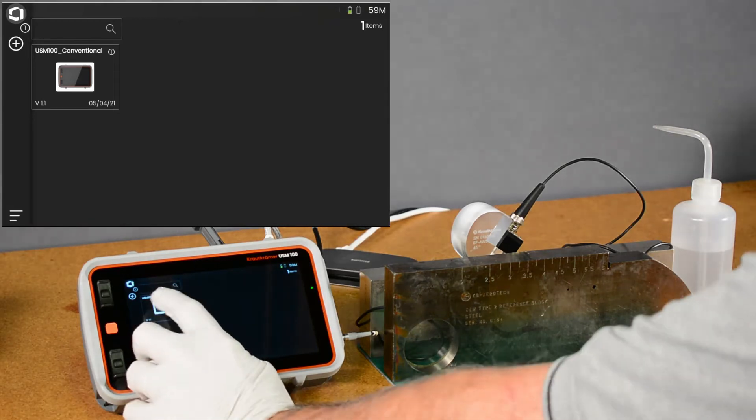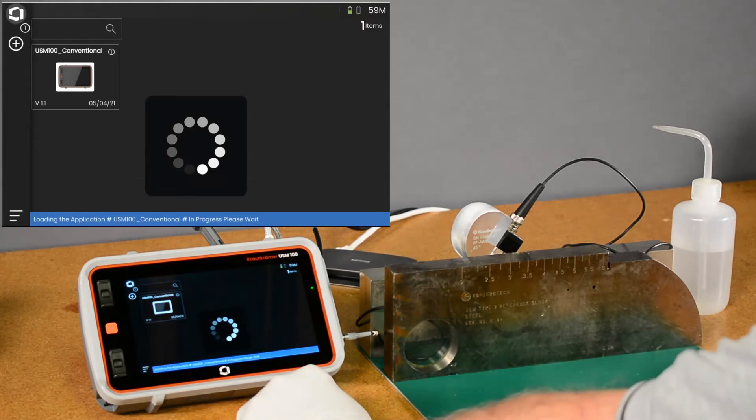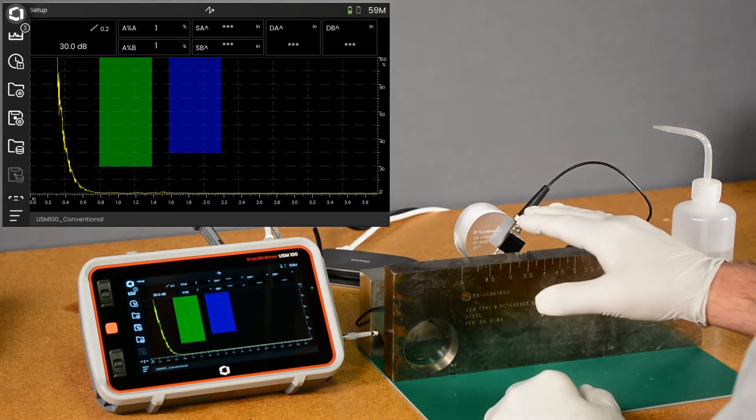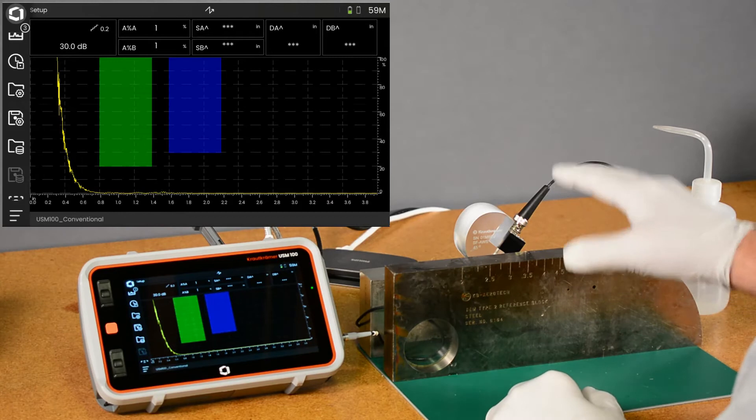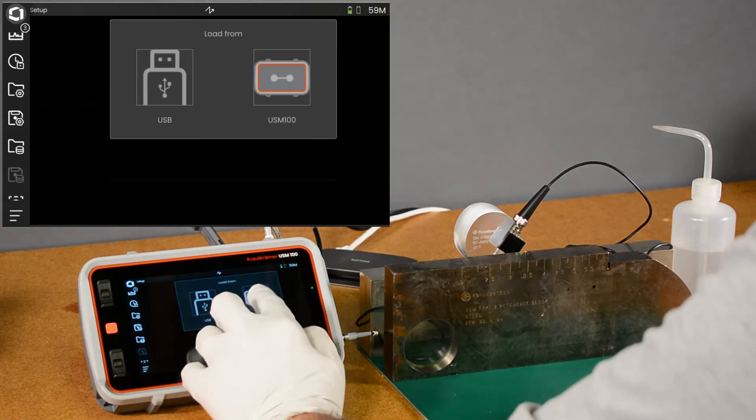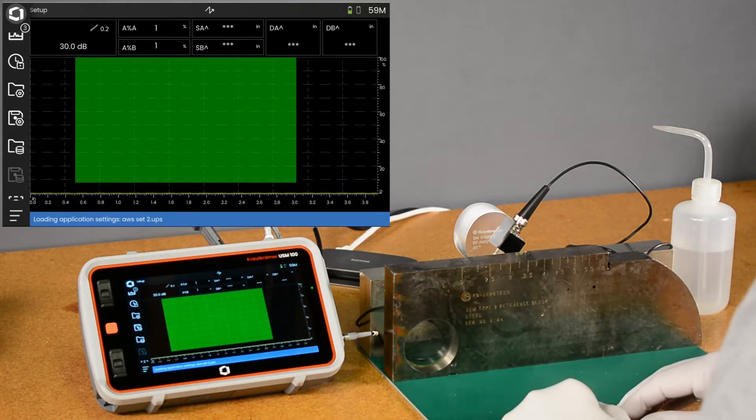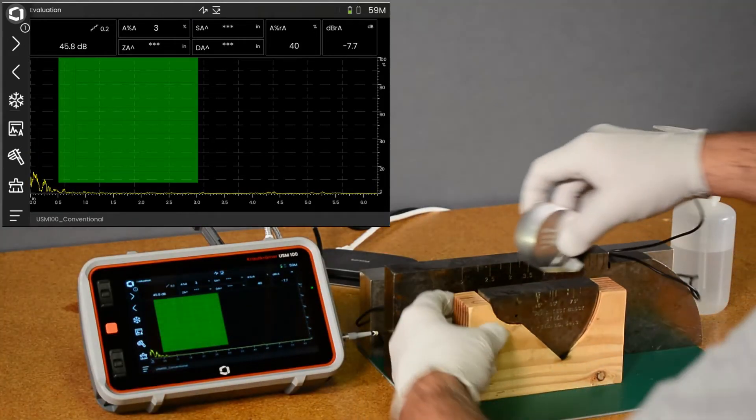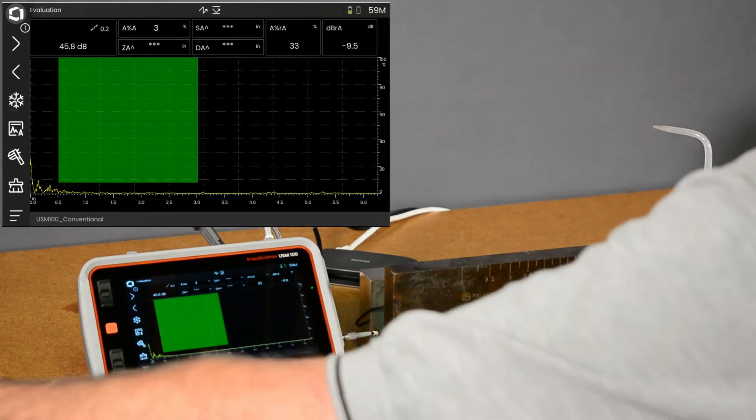First step, we're going to launch our app. I've already gone ahead and set up the probe parameters and calibrated for delay and velocity on the IIW block and checked my angle. I'm going to load those settings - AWS set two, which gives me a basic setup. Let's pull in a DSC block quickly and we can see there's our one inch and five inch echoes. We're all set there.